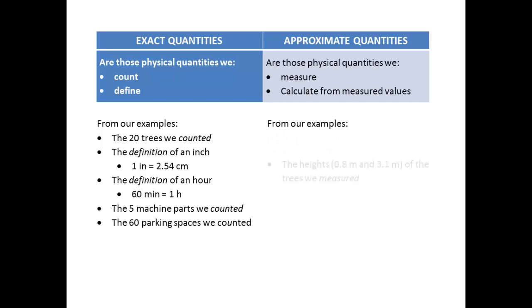From our examples again, if we take a look at the heights of the trees that we measured—the 0.8 meters and 3.1 meters—that was the low and the high. Since we measured those, those are considered approximate quantities. And how they're written to one decimal place is indicating to us that our measurement tool can only read to that one decimal place.